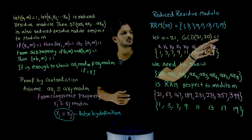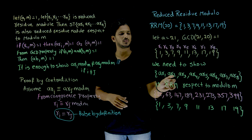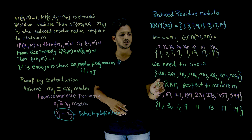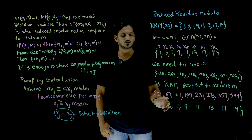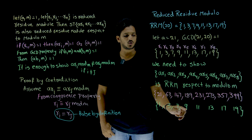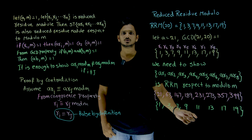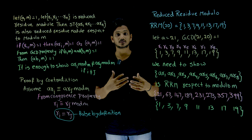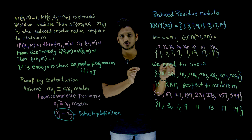Let us take the example A = 21, GCD(21, 20) = 1. Then: 21×1 = 21, 21×3 = 63, 21×7 = 147, and so on — these are the A·Ri values. Now: 21 mod 20 = 1, 63 mod 20 = 3, 147 mod 20 = 7, 189 mod 20 = 9, 231 mod 20 = 11. We got exactly the same reduced residue modulo set. In this example they appear in the same sequence, but in other examples the order may differ; however you will always get the complete reduced residue modulo set.